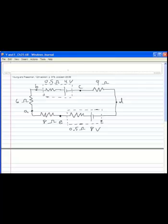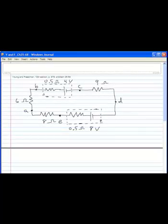The first battery has an EMF of 4 volts and an internal resistance of half an ohm. The other battery has an EMF of 8 volts and internal resistance of half an ohm.